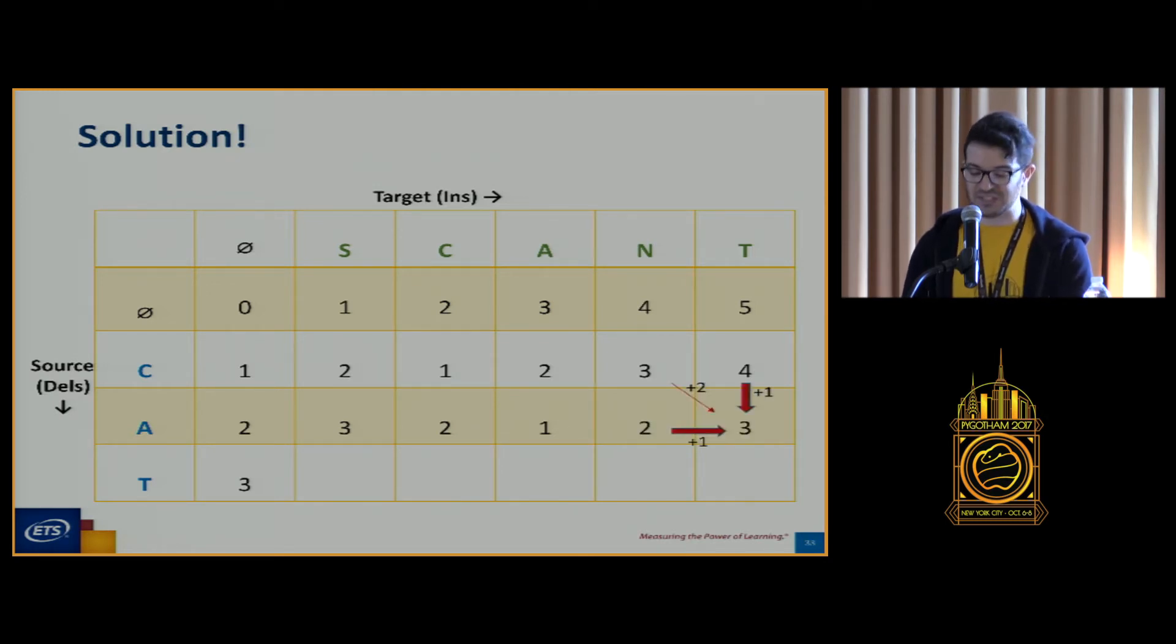So if we were just trying to go from the letter C to the word scant, we would have a cost of four. Okay, we can continue on to the next row. Same thing. These are not the same letter, so the same costs. These are not the same letter, so the same cost. And now, because we're going from an A to an A, these are an equal substitution, so we have the cost of zero.